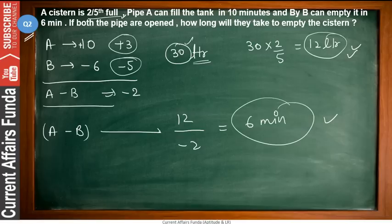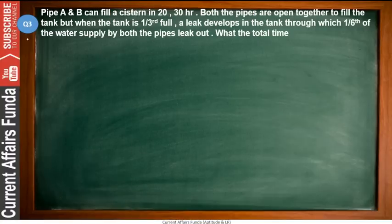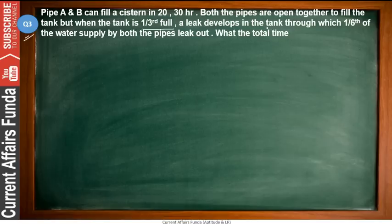Now problem number 3. Pipe A and B can fill a cistern in 20 and 30 hours. Both pipes are opened together to fill the tank, but when the tank is 1/3 full, a leak develops through which 1/6 of the water supply from both pipes leaks out. What is the total time taken to fill the tank?